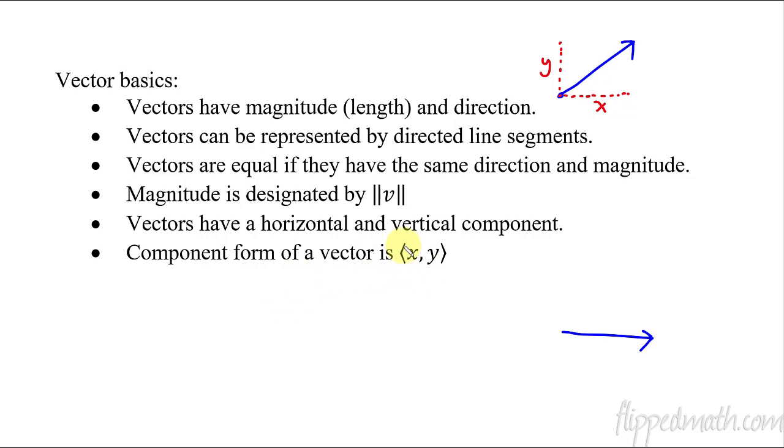Then we have the component form is this weird little bracket, weird little bracket. And then we have x, y inside here. This is the horizontal component. This number here represents the vertical component, the up and down. So now we just did all that as a review.